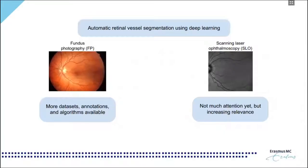In this work, we use two imaging modalities that depict the vessel tree in the human retina. Fundus photography is vastly used in clinical practice and has received a lot of attention by the medical imaging community. Scanning laser ophthalmoscopy has not been that studied yet, but it is becoming increasingly common and can provide sharper images than fundus in some pathologies.